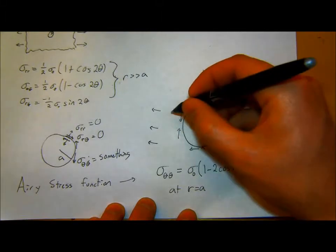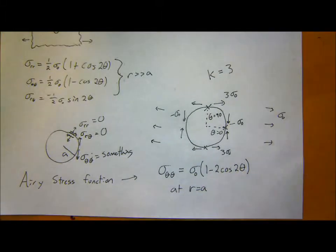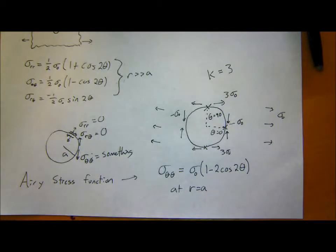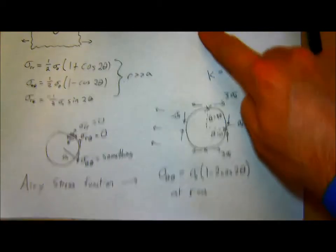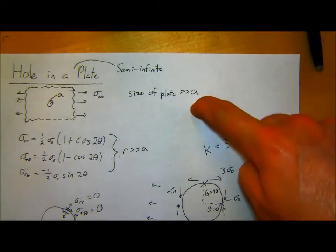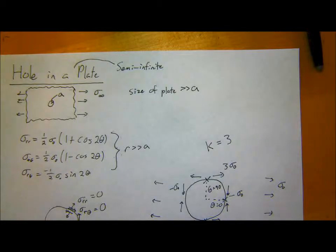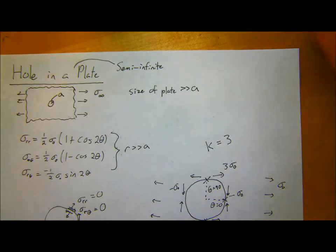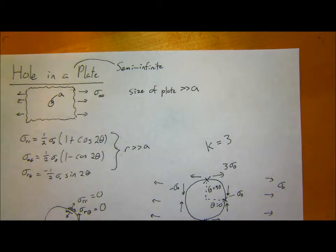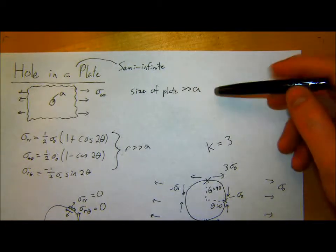Does the value of the hole radius a matter for the stress concentration? In this case, for a semi-infinite plate, it actually doesn't. But this assumes that the size of the plate is much larger than a. If your plate gets small relative to the hole, you get extra stress concentration factors — I'll try to talk about that on Wednesday. But if the hole isn't perfectly circular, the aspect ratio matters, which I'll show toward the end of today.